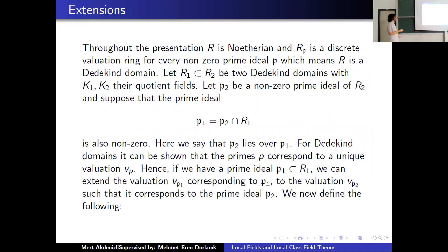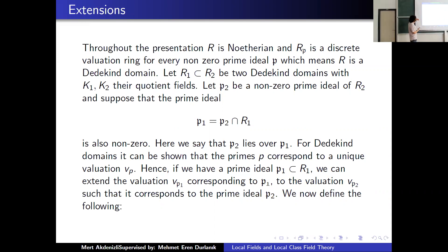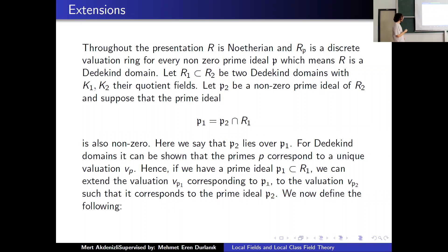Throughout, we will assume that R is Noetherian, meaning its ideals are finitely generated, and R_p is a discrete valuation ring. This means we assume R is a Dedekind domain. If we have two Dedekind domains and look at an extension, we can obtain a prime ideal of R_1 by intersecting R_1 with P_2. We say P_2 lies over P_1, and if we have a valuation corresponding to P_1, we can extend the valuation of P_2 such that when restricted to R_1, it becomes the valuation corresponding to P_1.